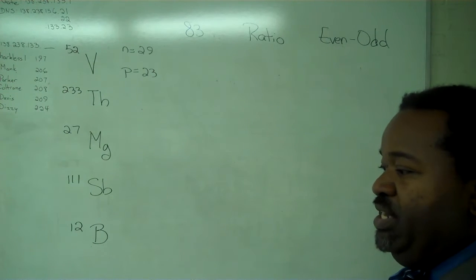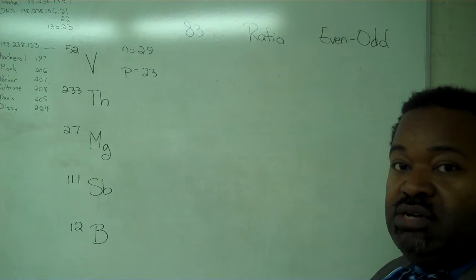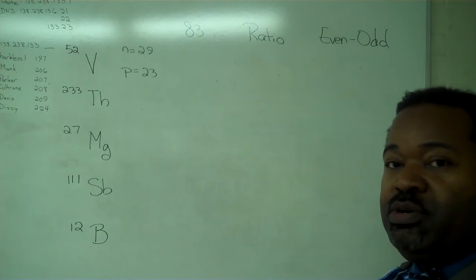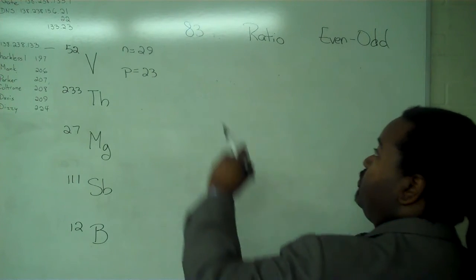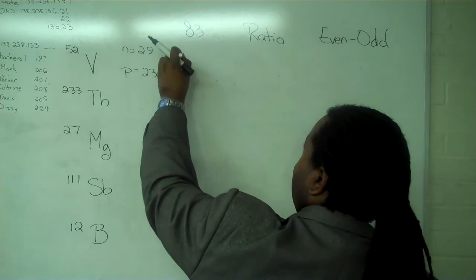The first test is the 83 test. It's straightforward. We check to see if the number of protons is greater than 83. It's not, so this is a pass.